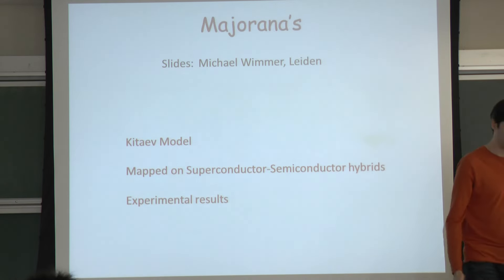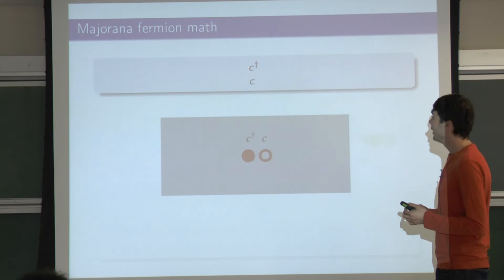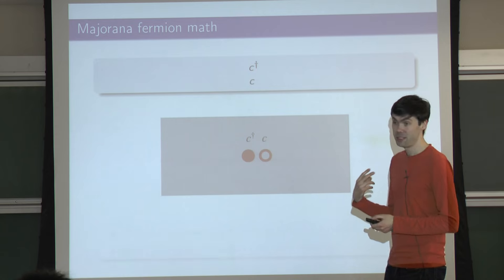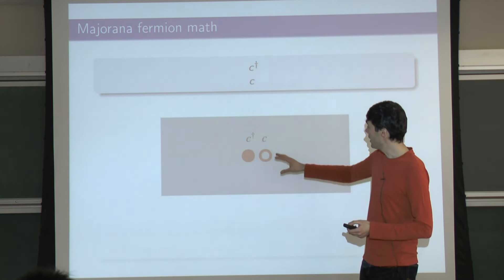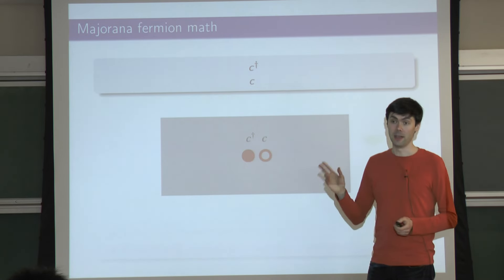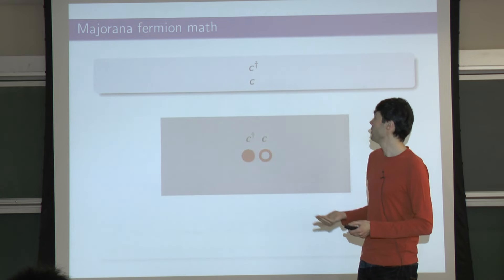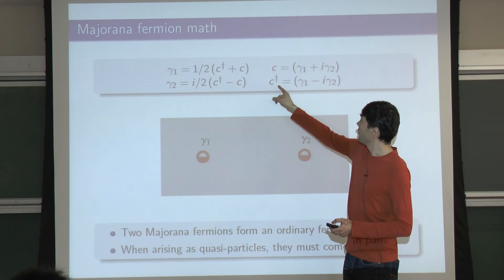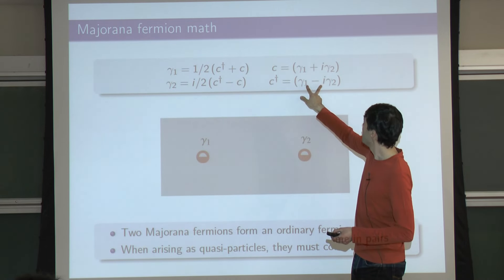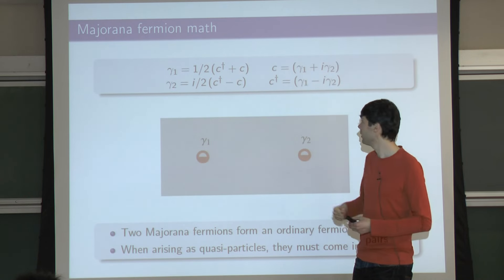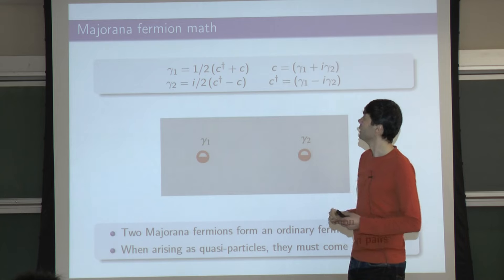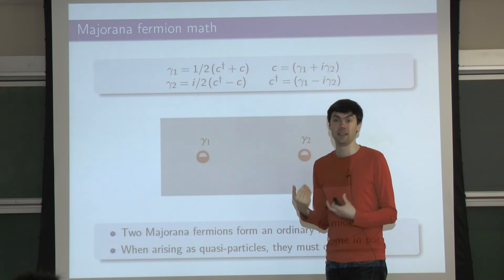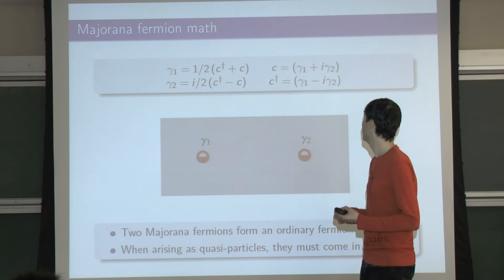Majorana fermions are particles that are their own antiparticles. In mathematical terms, you can rewrite the conventional creation and annihilation operators for fermions like electrons in terms of Majorana operators. The creation of an electron is a superposition of two Majorana operators, and the annihilation of an electron is another superposition of two Majorana operators. This is a linear transformation, so you can do all your second quantization in the basis of these Majorana operators.